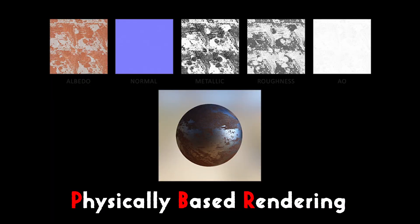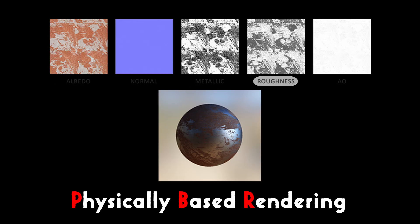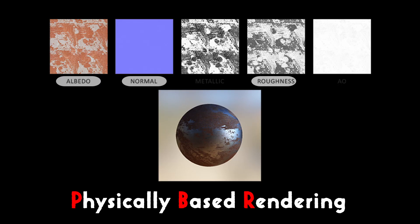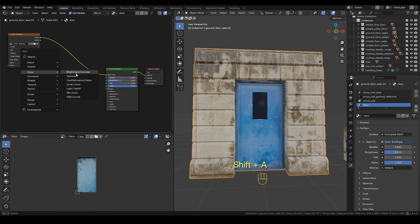To create a good PBR material, you ideally want five texture maps: base color or albedo, normal map, metallic, roughness, and ambient occlusion. These give you the full range of surface detail and realism. But when in a tight spot, depending on your project, you can often get away with just three: base color, roughness, and normal. And in my case, that's all I'll need for this sci-fi city.